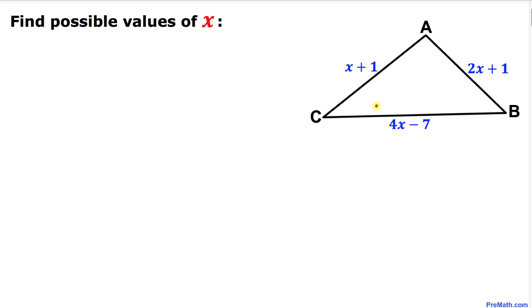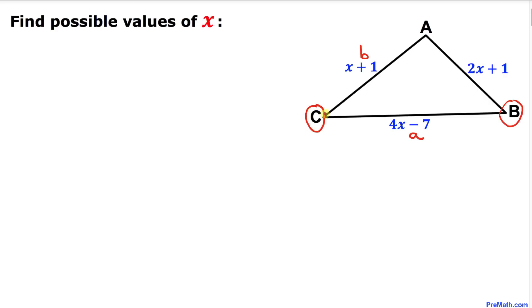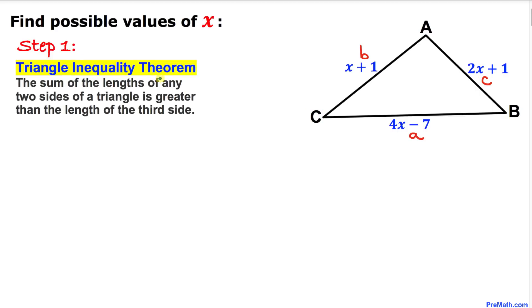Let's get started with the solution. First, let's focus on the vertices of this triangle. This is vertex A, so the opposite side I am going to call lowercase a. For vertex B I am going to call the opposite side lowercase b, and likewise for vertex C I'm going to call the opposite side lowercase c.